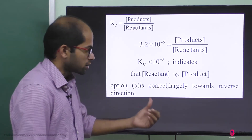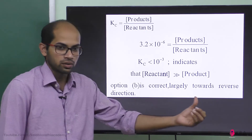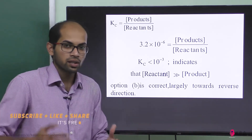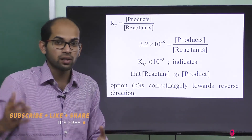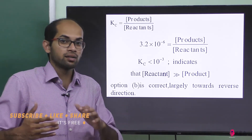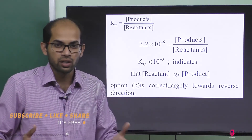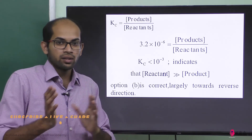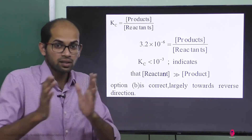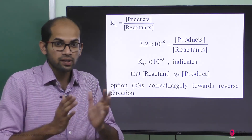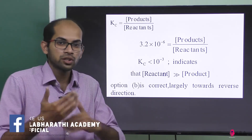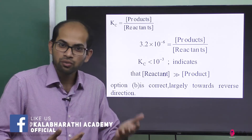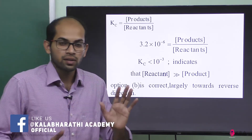To summarize: when Kc is less than 10 to the power minus 3, the reaction is largely towards reverse direction. When Kc is greater than 10 to the power plus 3, it is towards the forward direction. Around 10 to the power minus 3, the concentrations of products and reactants are approximately equal.